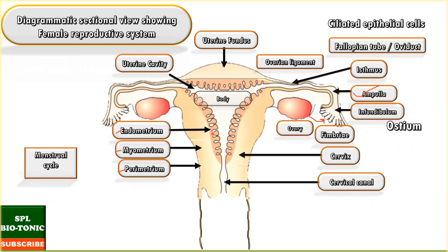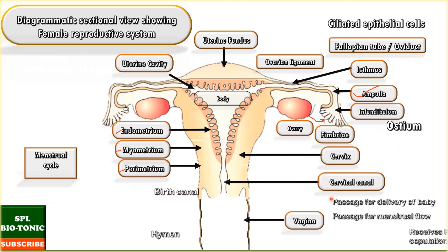The thickness of the endometrium changes as per the phases of the menstrual cycle. It is richly supplied with blood vessels and uterine glands. The cervical canal along with the vagina forms the birth canal.